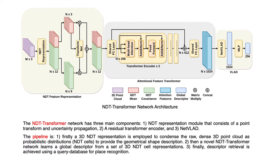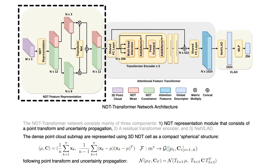The NDT Transformer network has three main components. First, an NDT representation module with a point transform and attentive propagation, which converts the raw point cloud to NDT cells with a canonical view. Second, a residual network encoder strengthens the local feature using a self-attention mechanism. Third, NetVLAD layers aggregate local features and learn a global descriptor. Now let's have a look in detail.